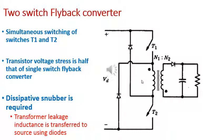In the two-switch flyback converter, both switches turn on and off simultaneously, and hence the energy is stored in the primary winding. When both are turned off, the secondary side diode is forward biased and energy is transferred to the load. Leakage inductance energy is transferred to the source side without any need for snubber circuit elements, as opposed to the single-switch flyback converter.